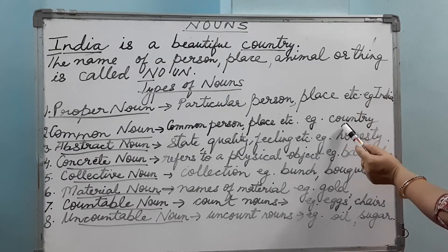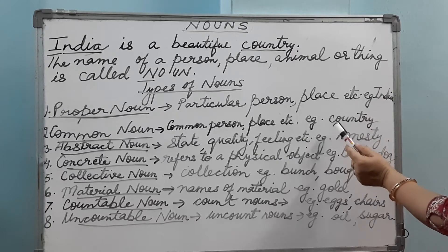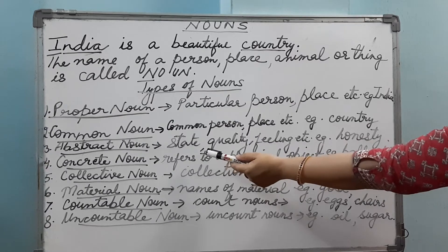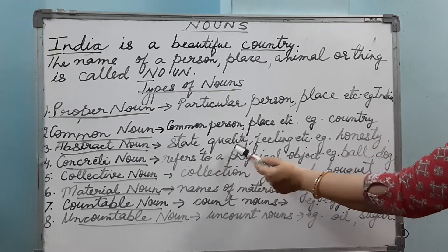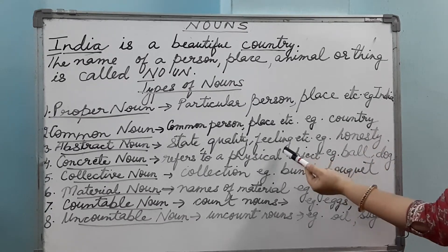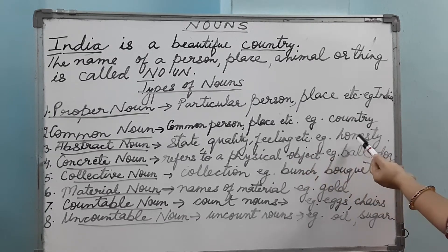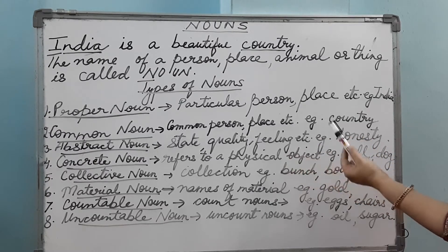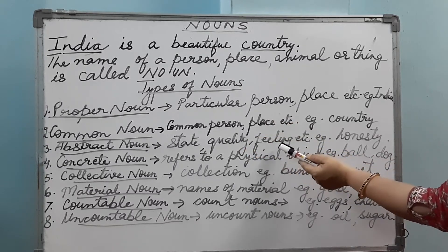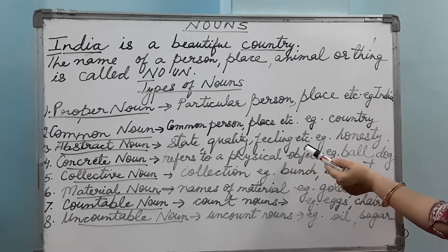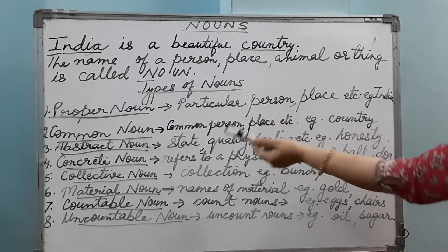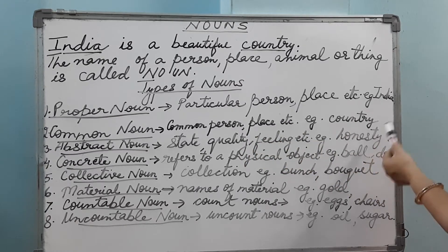I hope proper noun and common noun are very clear to you. Now let's take abstract noun. An abstract noun is a noun which is the name of a state, a quality, or a feeling. It is a name given to a feeling or a quality. For example, honesty. You can say feeling — can you touch a feeling? No, you cannot touch it. So abstract nouns you can never touch; you can only feel them and understand them. Examples: honesty, truth, etc.